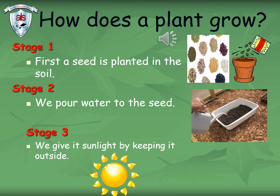As we learned, there are different types of plants. Now let us see what we need for a plant to grow. For a plant to grow, the plant needs a seed, then soil, water, air, and sunlight. So how does a plant grow? Let us see the stages of how a plant grows.